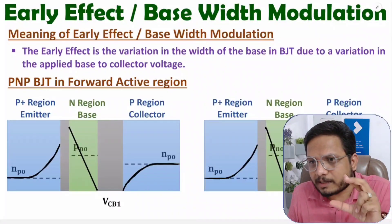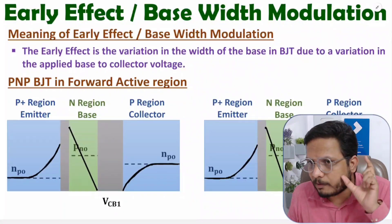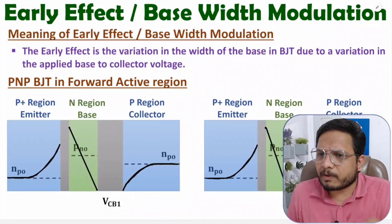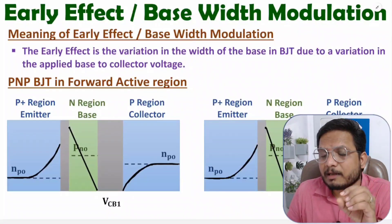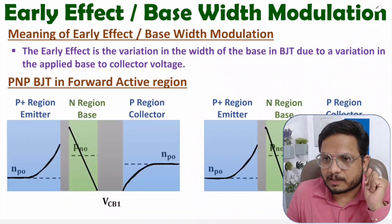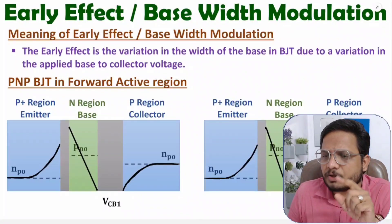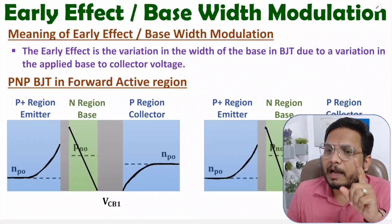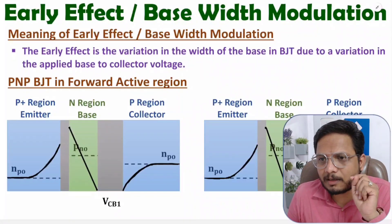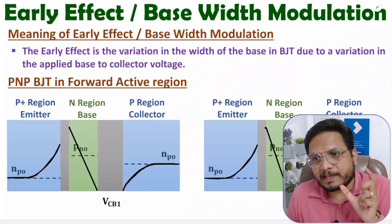To explain this I'll consider a practical example using a PNP transistor kept in the forward active region. To keep a transistor in forward active region, the emitter-base junction must be forward biased and the collector-base junction must be reverse biased. Based on that I'll explain how the early effect occurs.